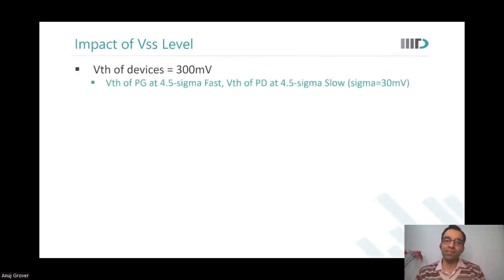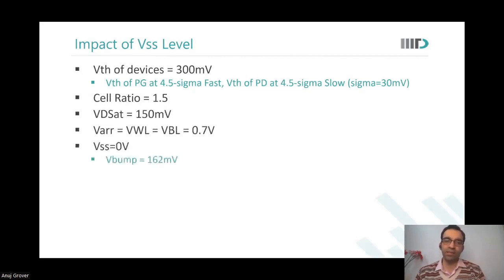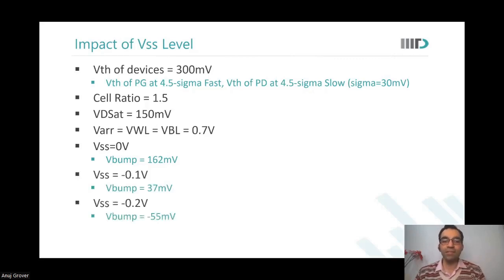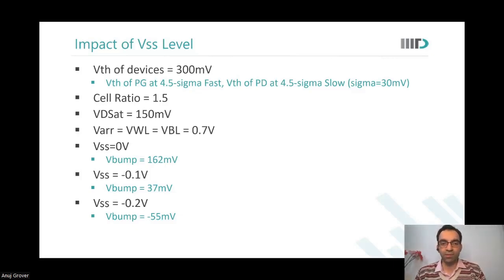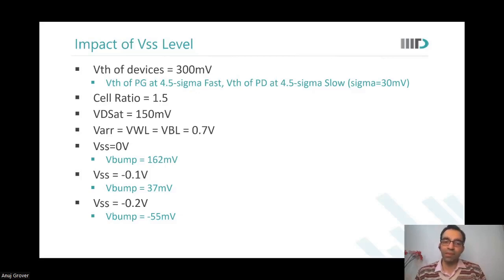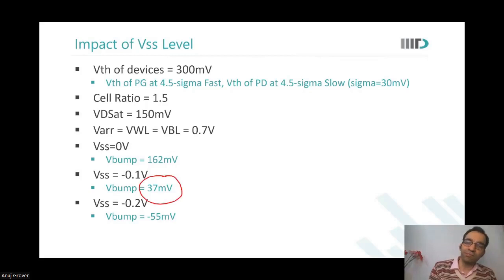Now, what is the impact of VSS? We always considered VSS to be ground. If VSS is made negative, V bump goes lower (better stability). If VSS is positive, V bump would go higher. So negative VSS is also a read assist scheme that can improve stability.